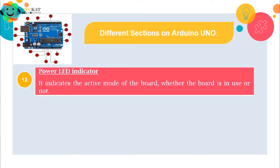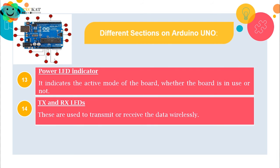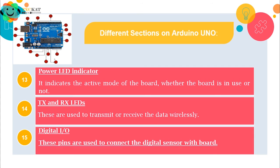Section 13 is the Power LED Indicator — it shows whether the board is working. If it's not working it won't glow; if code is being uploaded it blinks. We also have TX and RX LEDs, which glow during wireless communication. The TX and RX labels also appear on digital pins 0 and 1 for transmitter and receiver functions.